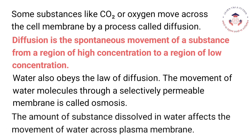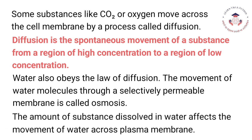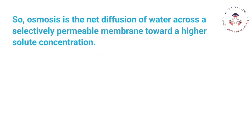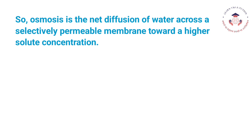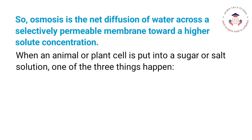The amount of substance dissolved in water affects the movement of water across the plasma membrane. Osmosis is the net diffusion of water across a selectively permeable membrane toward a higher solute concentration.